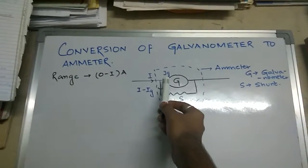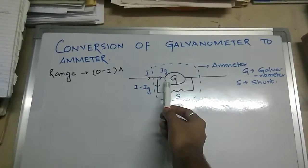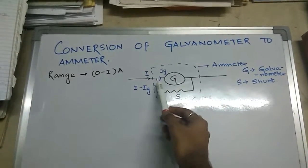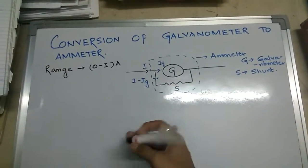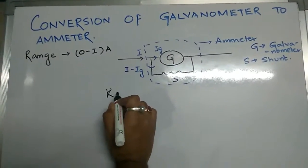The current passing through the shunt is given as I minus Ig. Now applying Kirchhoff's voltage rule across this loop...